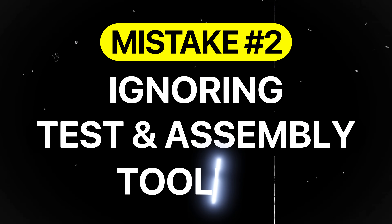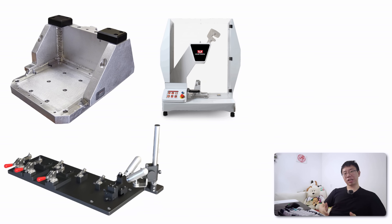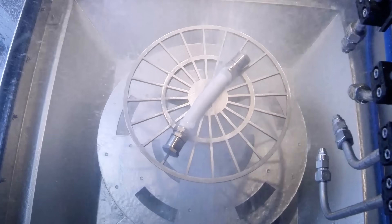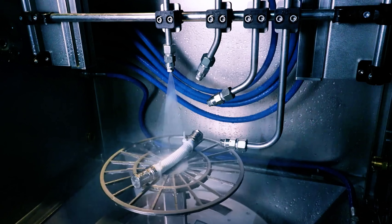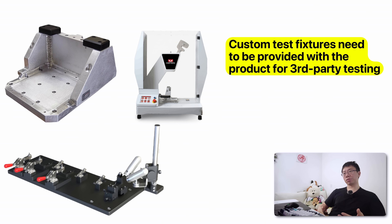Mistake number two is ignoring tooling needs for testing and assembly. Fixtures, jigs, and test setups are critical but often overlooked during design. Based on my experience, in many cases when sending parts to a test house or lab for load, vibration, or environmental certification testing, you're required to provide a custom test fixture along with the product to ensure proper mounting and accurate results.